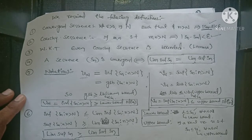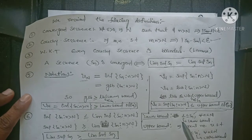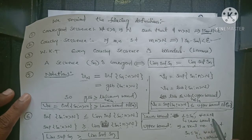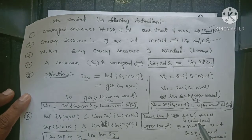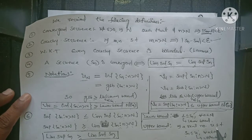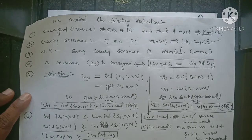We also need lower bound and upper bound. What is lower bound? A real number L is called a lower bound of a sequence Sn if L is less than or equal to Sn, and Sn is called bounded below for every n. In that sequence, we find a number L which is less than all members of the sequence. For upper bound, there exists a real number U such that Sn is less than or equal to U for every n. Every member of the sequence is always either equal to or less than U. That number U is called the upper bound.